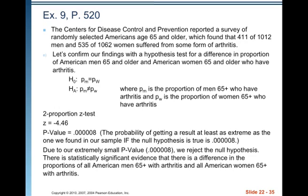We get a p-value of 0.0000008 and a Z-value of negative 4.46. The probability of getting a result at least as extreme as the one we found, if the null hypothesis is true, is 0.0000008 — not very likely. Due to our extremely small p-value, we reject the null hypothesis. There is statistically significant evidence that there is a difference in the proportions of all American men 65 and older with arthritis and all American women 65 and older with arthritis.